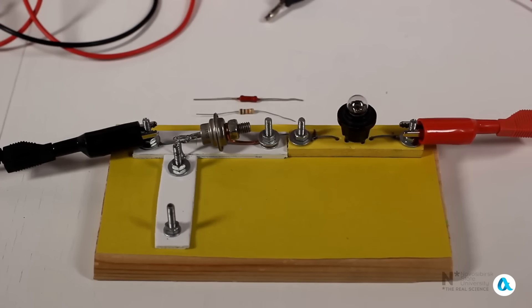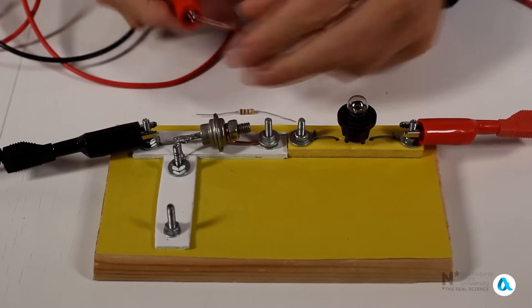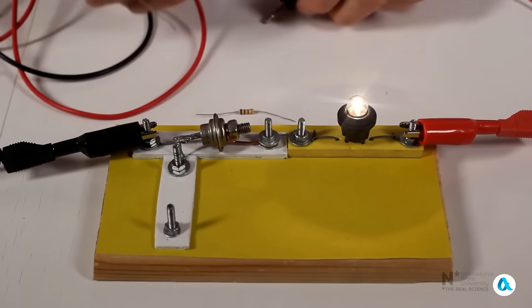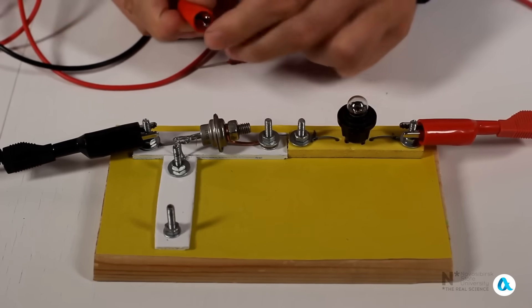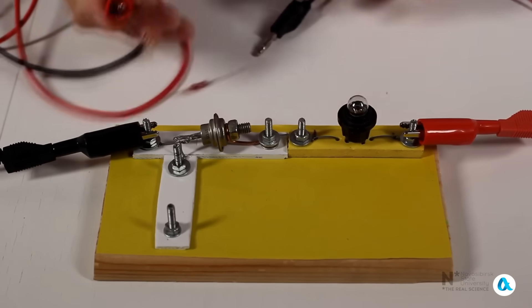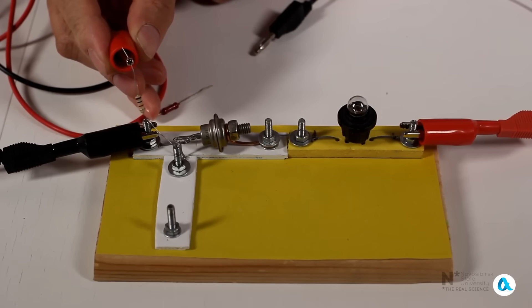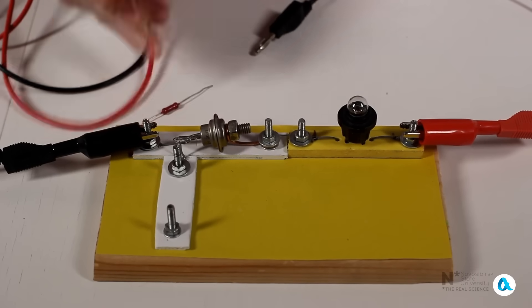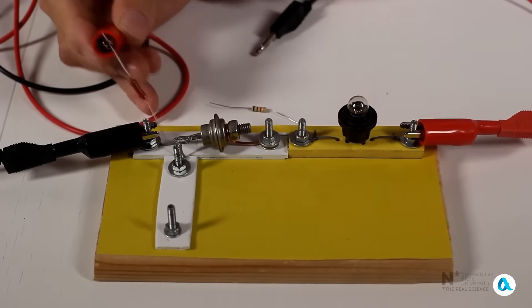Now I will show that the thyristor is actually controlled not by voltage, but by current. Let's activate the thyristor through a 200 ohm resistor. There, and the thyristor has triggered. Let's turn it off and use a kilohm resistor. And with the kilohm resistor, the thyristor cannot be activated. The resistance of the control circuit is too high, and the current in it is too low for the switch to activate. But the control current through the 200 ohm resistor, as we saw, is quite sufficient.